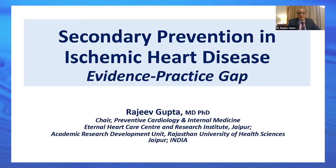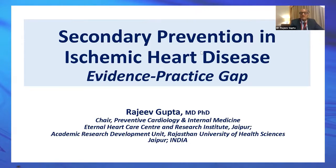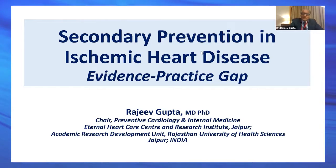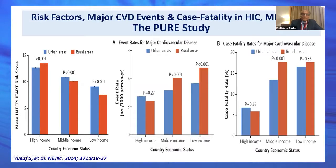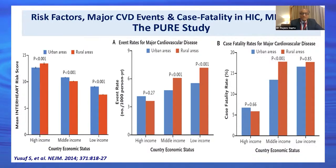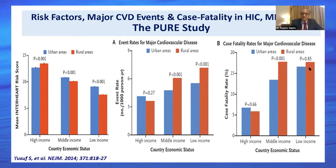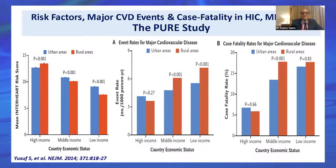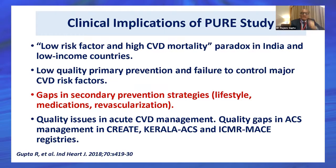We'll talk of the evidence-practice gap — this is the major area of interest to all of us: how do we fix this gap, which is very important not only in our country but all over the world. Pure studies showed that the entire risk score was lower in low-income countries, including India, Pakistan, and some countries in South Asia and Africa. Contrary to usual belief, mortality was much higher in the rural population of India compared to the urban population. Clearly there is a paradox: low risk factor, high CVD mortality.